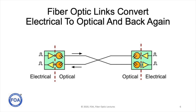The fiber optic links that provide the backbone of all telecommunications networks and the internet are actually quite simple. They have devices on either end that connect to the electrical devices on one side and provide optical signals over fiber optics on the other side. So at each end of a link you'll find a converter that converts from the electrical domain to the optical domain and provides for the transmission of signals.